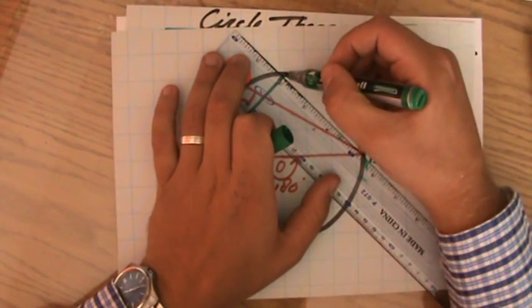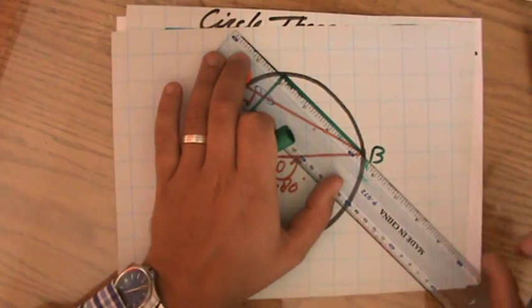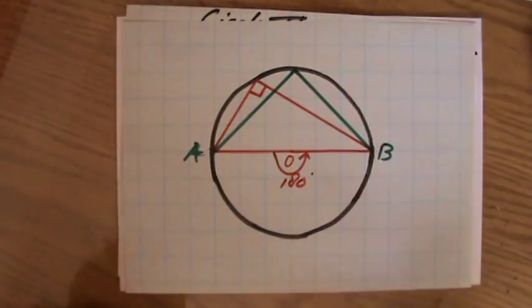Because a right-angle triangle, of course, all of a sudden, you can do some Pythagoras theorem. All of a sudden, you can do some basic trigonometry.